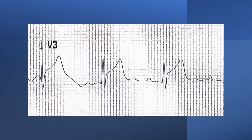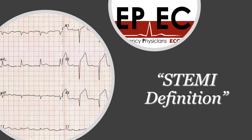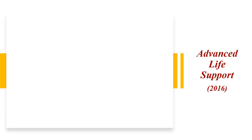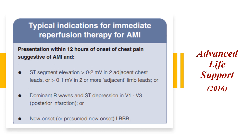The question is: would we consider this a STEMI or not? To find out, we need to review the STEMI definition. Starting from the Advanced Life Support definition: to define an acute MI you need chest pain plus more than 2 millimeters of ST elevation in 2 adjacent chest leads, or more than 1 millimeter in 2 or more adjacent limb leads. So 2 millimeters in chest leads, 1 millimeter in limb leads — that is the ALS definition.